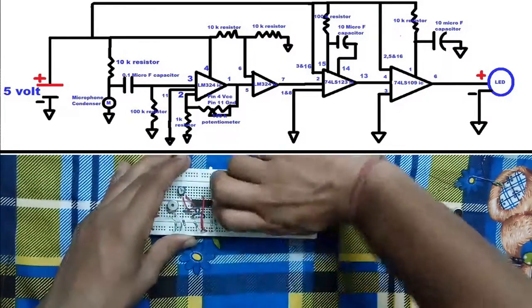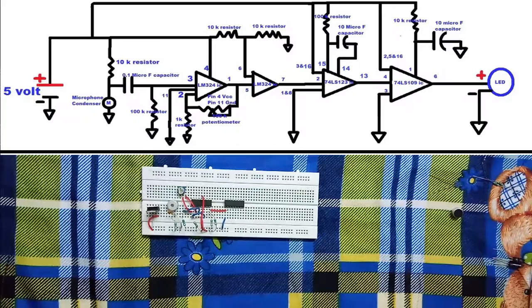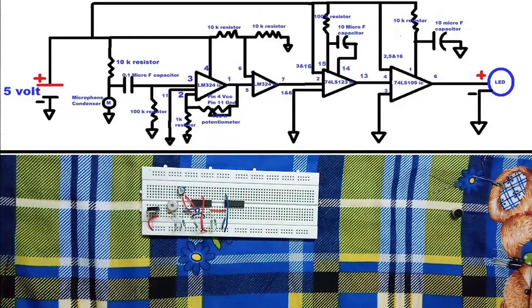Now I have taken 74LS123 IC and connected pin 7 of LM324 to pin 2 of 74LS123. Providing ground to pin 1 and VCC to pin 3.